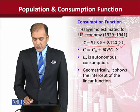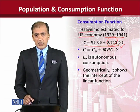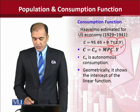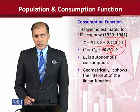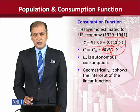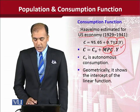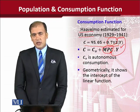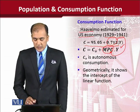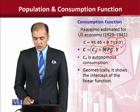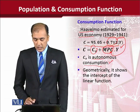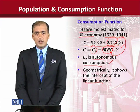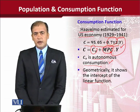In the consumption function, the slope is mathematically the rate of change, but in economic terms it is the marginal propensity to consume (MPC), which is important for understanding business cycles. The term c0 is the autonomous part of consumption, representing the intercept of the linear function — it appears at the y-axis in the diagram.